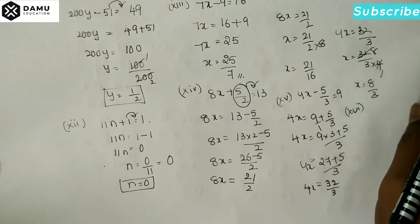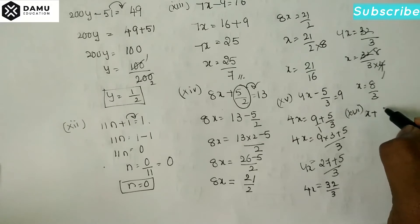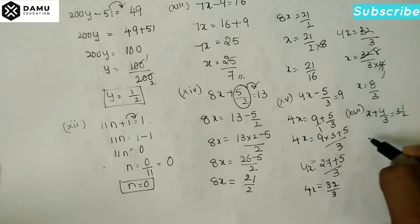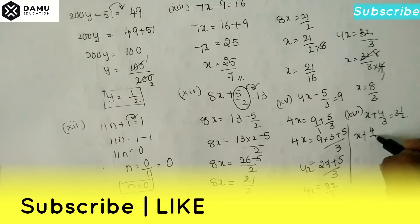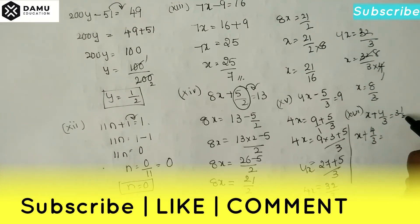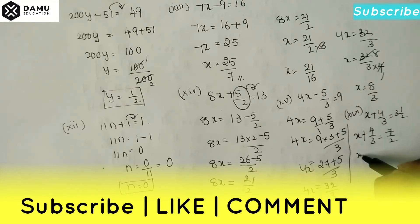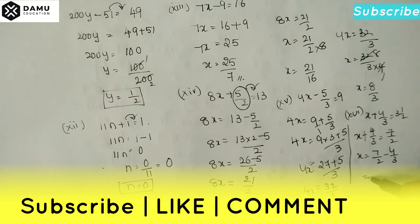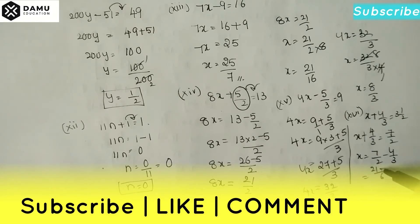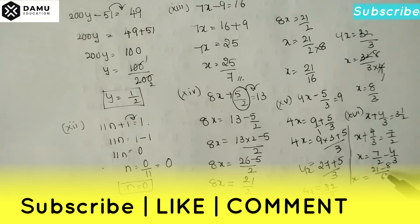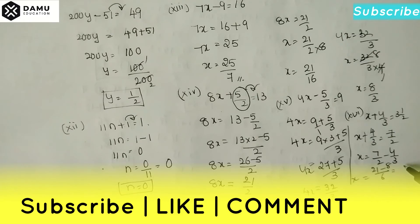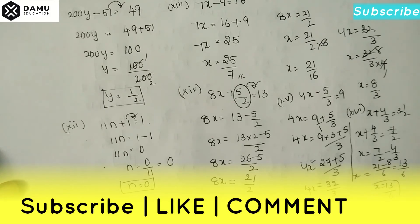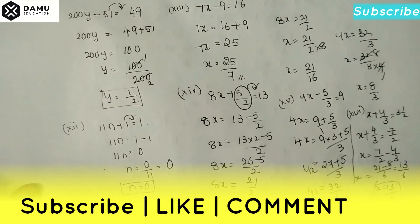The sixteenth one: 6⅙ × (x + 4/3) = 3½. Converting mixed fractions: 37/6 × (x + 4/3) = 7/2. Then x = 7/2 - 4/3. Taking LCM of 2 and 3 (which is 6): x = (21 - 8)/6 = 13/6. Thanks for watching, please subscribe.